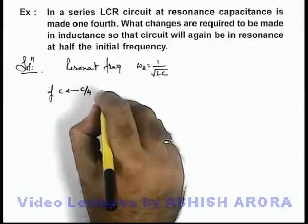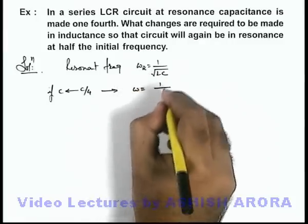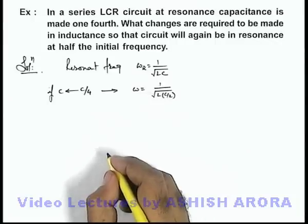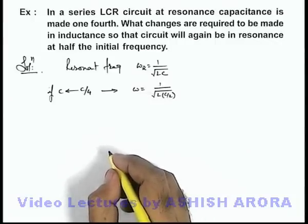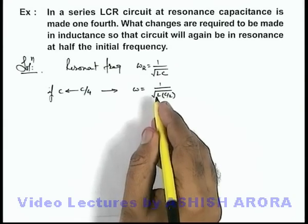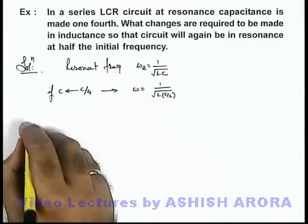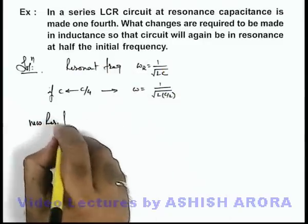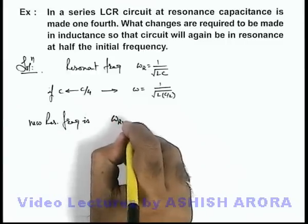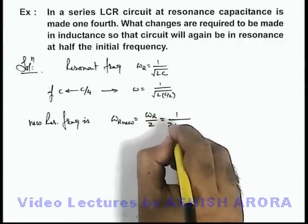We can see the frequency will change to 1 by root of L times C/2. We are required to find the changes to be made in the value of L so that the new resonant frequency will be half the initial frequency. So the new resonant frequency omega_r_new should equal omega_r by 2, which is 1 by 2 root LC.